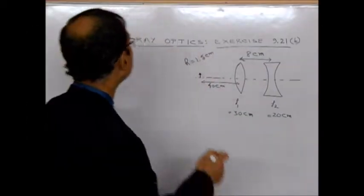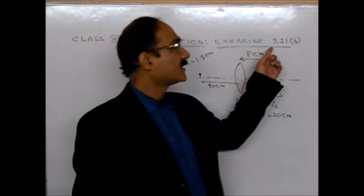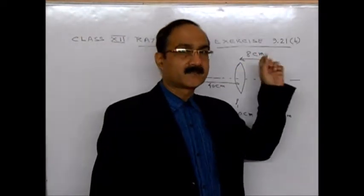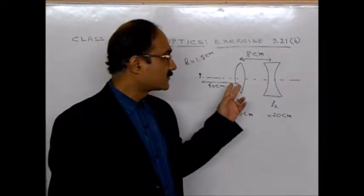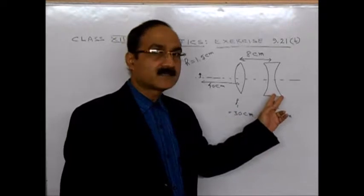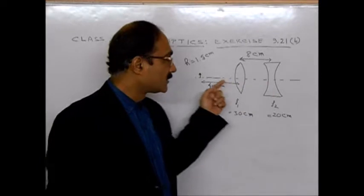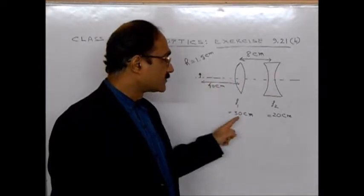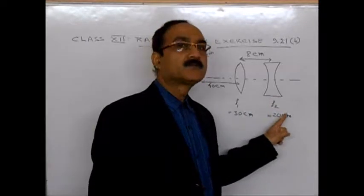This is the problem of class 12 ray optics exercise 9.21B part. Here it's given that there is a convex lens and a concave lens. They are separated by a distance of 8 cm. Each focal length is given to be 30 cm and 20 cm respectively.